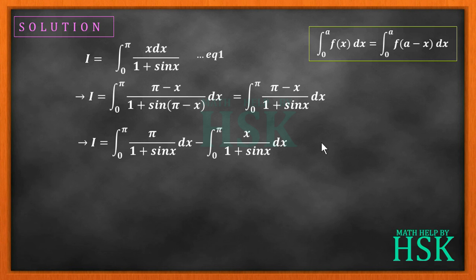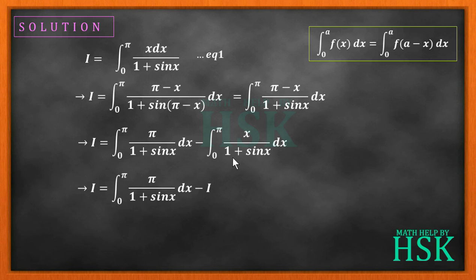What this step has done is very nice — the integral ∫₀^π x/(1+sin x) dx, which equals I, has appeared in this equation. When I substitute this as I, I have only one definite integral left to solve. So, always remember that when x appears in a definite integral, it can be removed this way. Moving I to the left side gives 2I = ∫₀^π π/(1+sin x) dx.